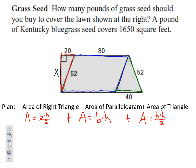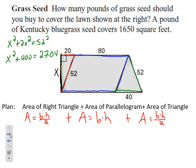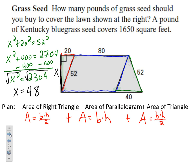I need to find this length — my height. I have a right triangle, so thinking back to the last chapter, I can use the Pythagorean theorem: x squared plus 20 squared equals 52 squared. So x squared plus 400 equals 2,704. Subtract 400 from both sides: x squared equals 2,304. Taking the square root of both sides, x equals 48. So my height is 48 — that's very important because I need the height for each one of my equations.